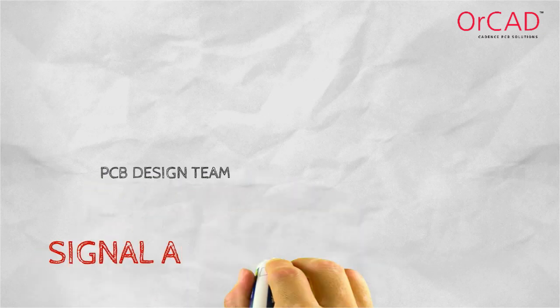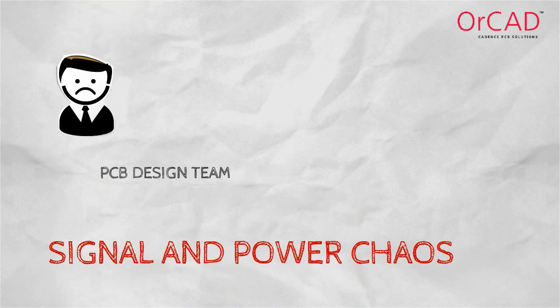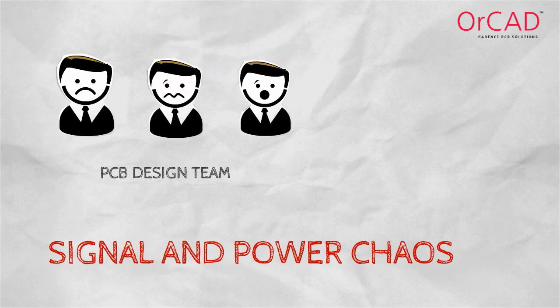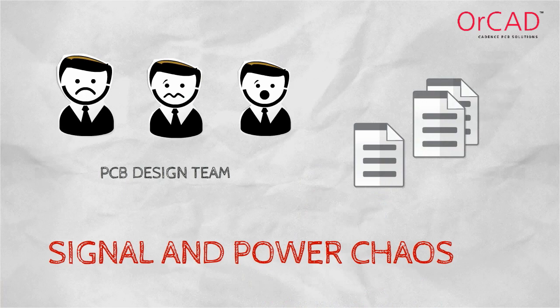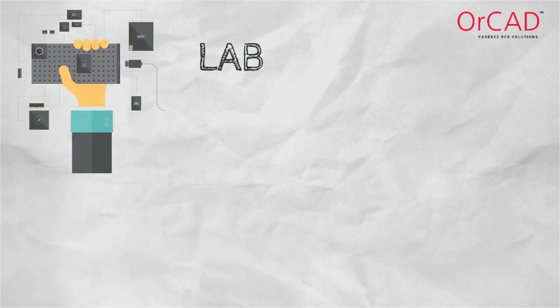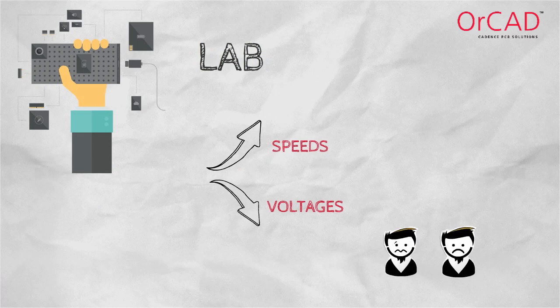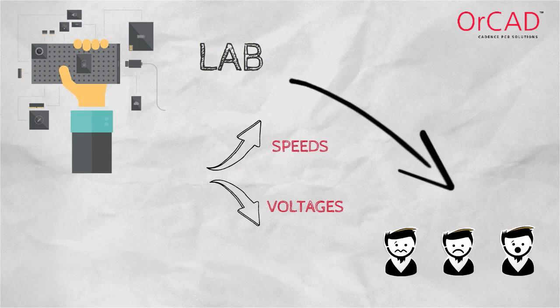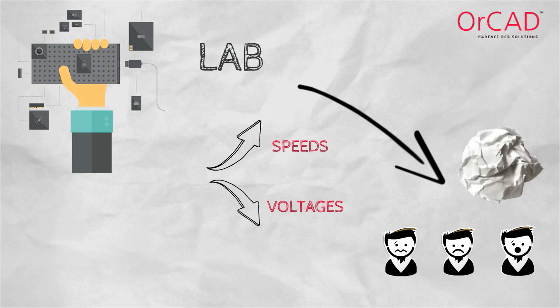Your PCB design team is experiencing signal and power integrity chaos. Whenever a PCB design begins, the design team starts with a specification. Due to signal and power integrity concerns, many times extra margin is added to those design specifications. When the design is complete, it goes to the lab for validation. However, due to higher speeds of signals and lower operating voltages, more times than not, problems are found in the lab, and those designs end up going back to the design team for rework.